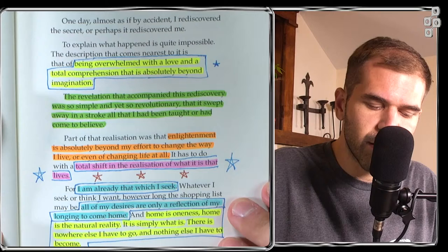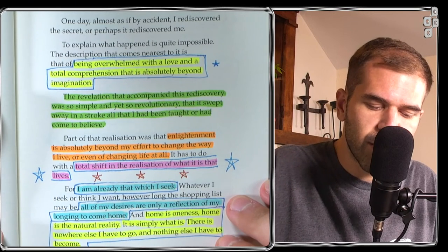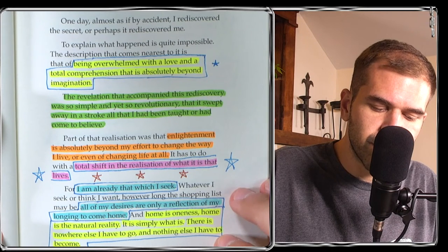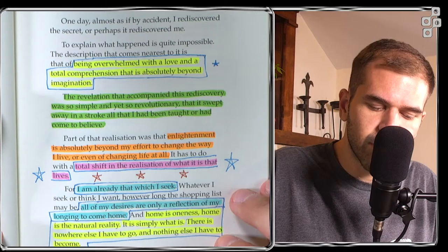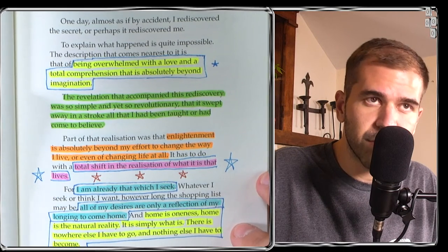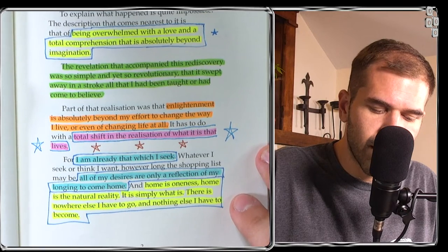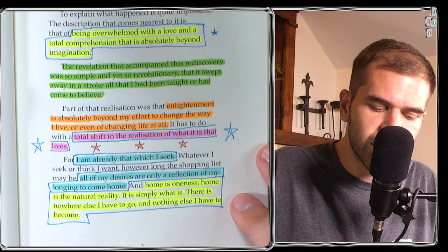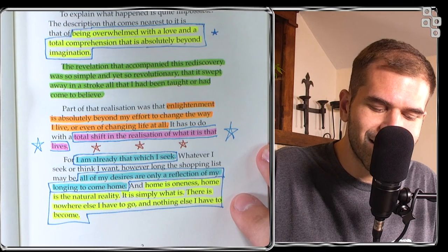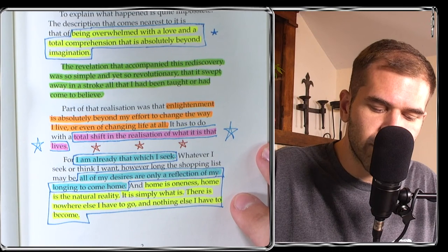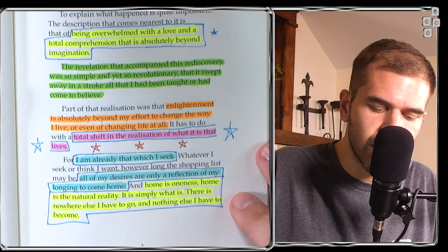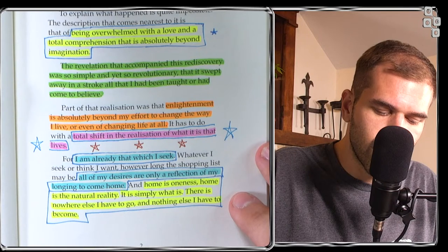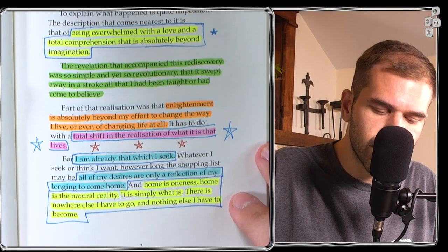Being overwhelmed with the love and the total comprehension that is absolutely beyond imagination. The revelation that accompanied this rediscovery was so simple and yet so revolutionary that it swept away in a stroke all that I had been taught or had come to believe. Enlightenment is absolutely beyond my effort to change the way I live or even of changing life at all. Enlightenment is a total shift in the realization of what it is that lives. I am already that which I seek. All of my desires are only a reflection of my longing to come home. And home is oneness.